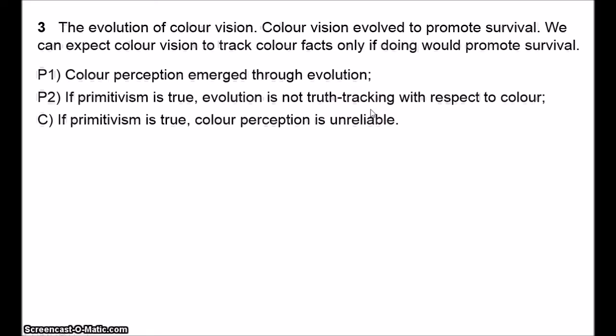What do we mean by truth-tracking? A process is truth-tracking if we can expect that process to deliver reliably true beliefs. Suppose I form beliefs by consulting a crystal ball — I might be right, maybe it will be stormy tomorrow, but we would assume that this is a result of luck. The crystal ball is an off-track process; it does not reliably produce true beliefs. A process of forming beliefs is truth-tracking if it produces true beliefs reliably, not just as a matter of luck. So this second premise says that if we accept primitivism, our capacities for detecting colour will be about as reliable as a crystal ball.